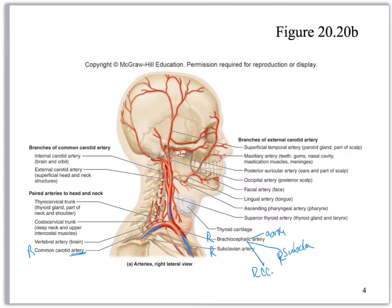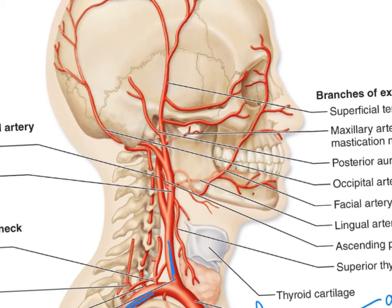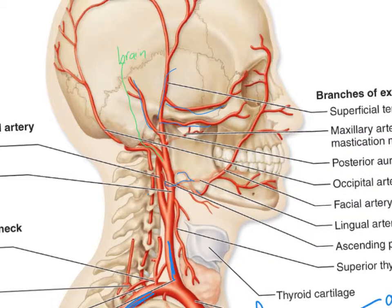Coming back to your right common carotid, that is then going to split into the external and internal carotids. My trick for this is to always look at the branching pattern. On the external, there are little branches that come off of it and it's going external, or outside the skull. Whereas the internal isn't — there are no little branches coming off of it and it's actually going to go into a hole and go into the brain area.